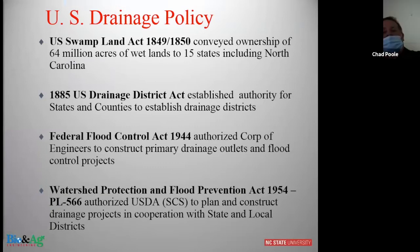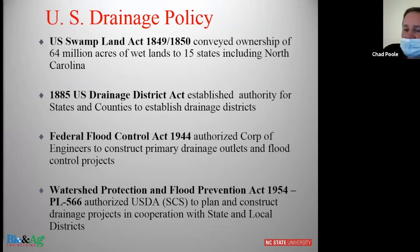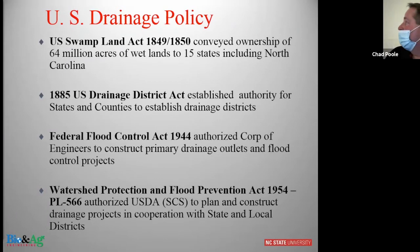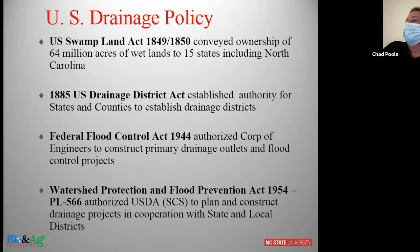I want to give a brief background on the infrastructure we have in eastern North Carolina and where it came from. It's the lifeline of all of our drainage systems. It started with U.S. drainage policy back in 1849-1850 with the U.S. Swamp Lands Act, which conveyed ownership of 64 million acres of what was classified as wet lands to 15 states including North Carolina. In 1885 the United States Government put in the Drainage District Act, which established authority for states and counties to establish drainage districts. Last count in an informal survey in coastal North Carolina, I've counted over 37 different drainage entities.